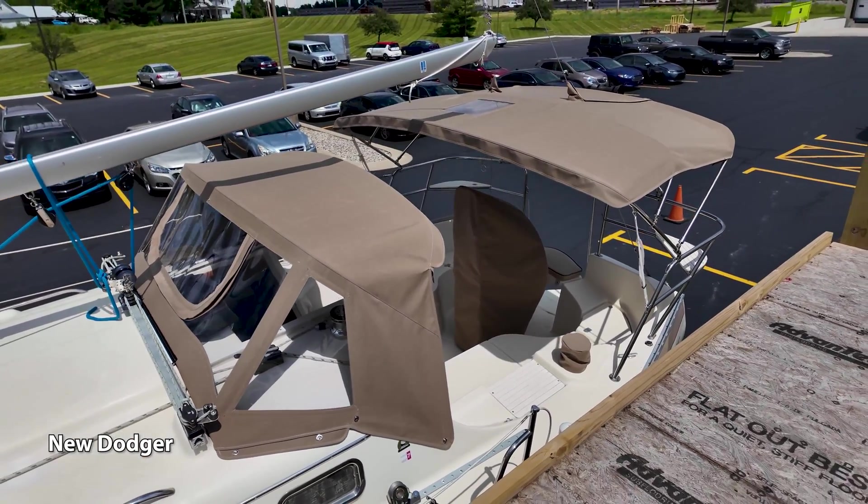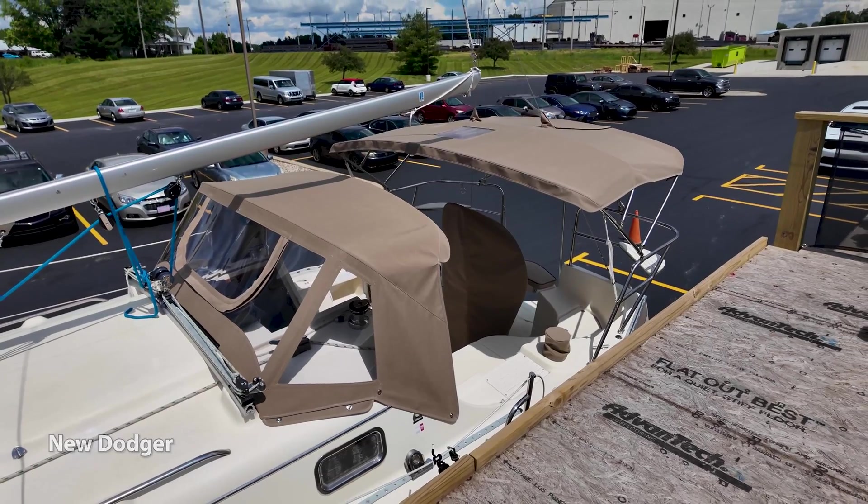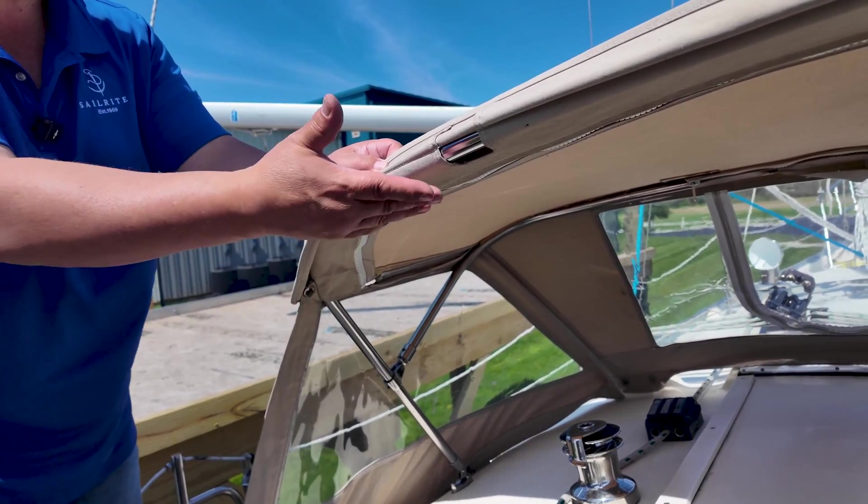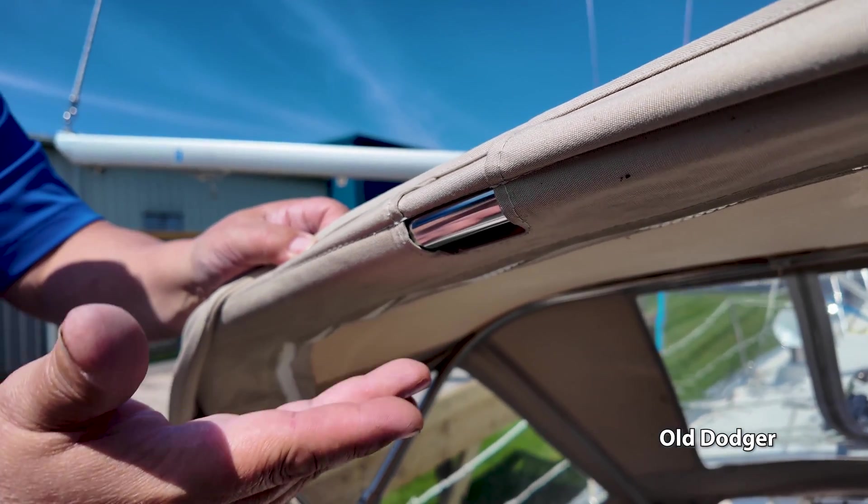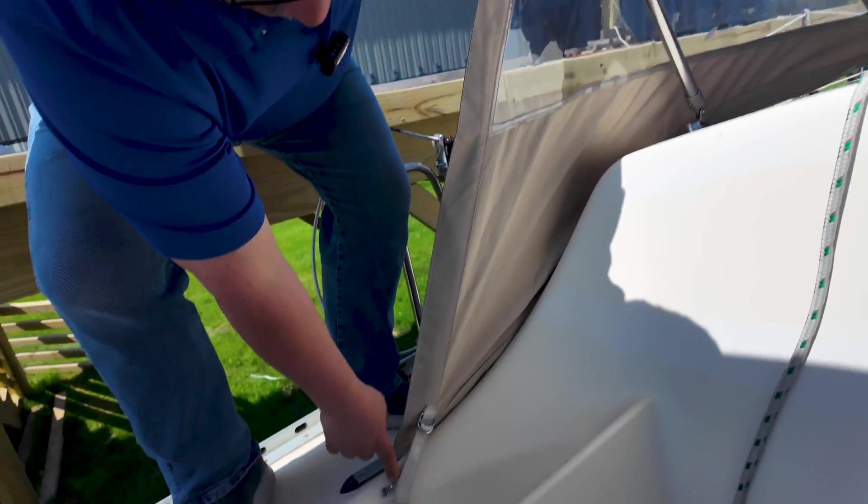Here's a look at the new dodger. We have a tutorial video showing how to make this dodger, if you'd like to view that. So this is the old dodger, and you can see that there's some openings in this pocket, probably for a webbing strap to come down to this strap eye down here.